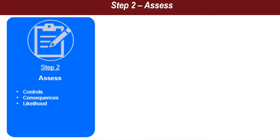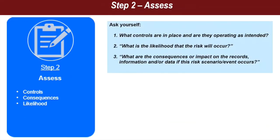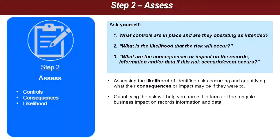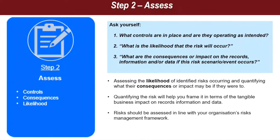Following the identification of risks and their causes, the second step is to assess each risk and estimate their severity by asking: what controls are in place and are they operating as intended? What is the likelihood that the risk will occur? And what are the consequences or impact on the records, information or data if they do? Assessing likelihood and consequences is twofold: first, to quantify the risk — that is, estimate the severity; and second, determining what treatment the risk requires and whether it needs to be addressed as a priority. Quantifying the risk will help you frame it in terms of tangible business impact, be it in dollars, hours lost in productivity, or reputation.